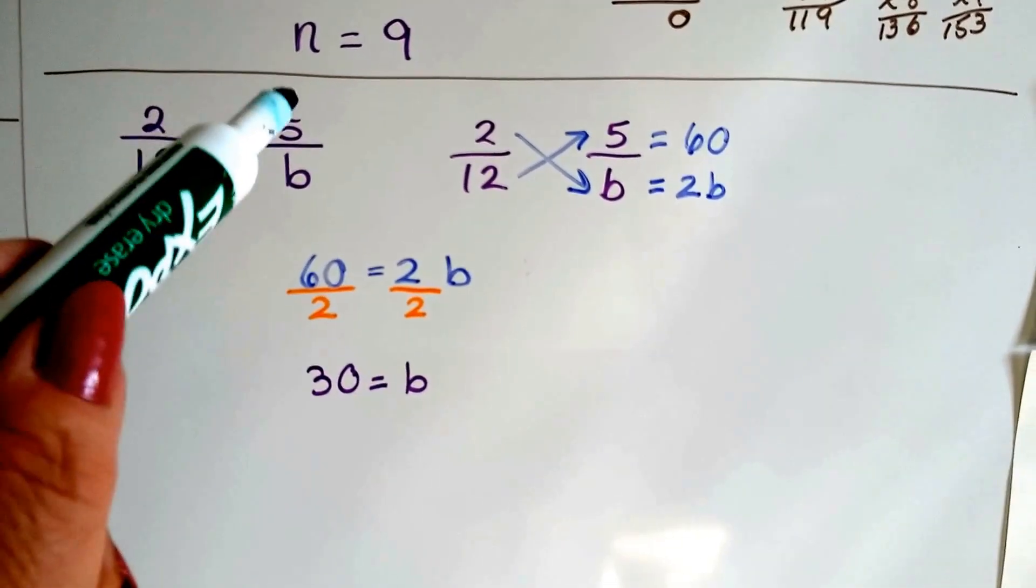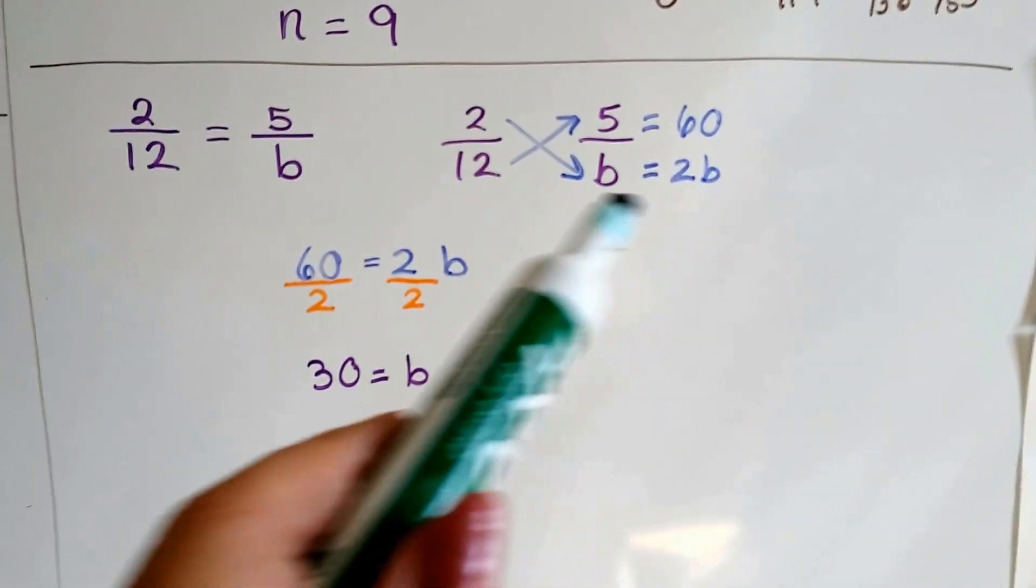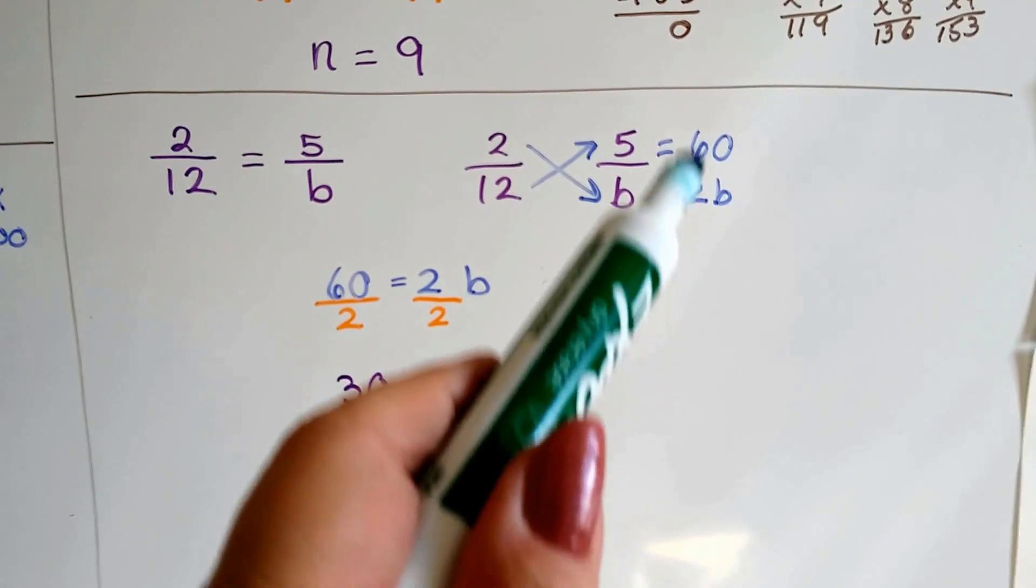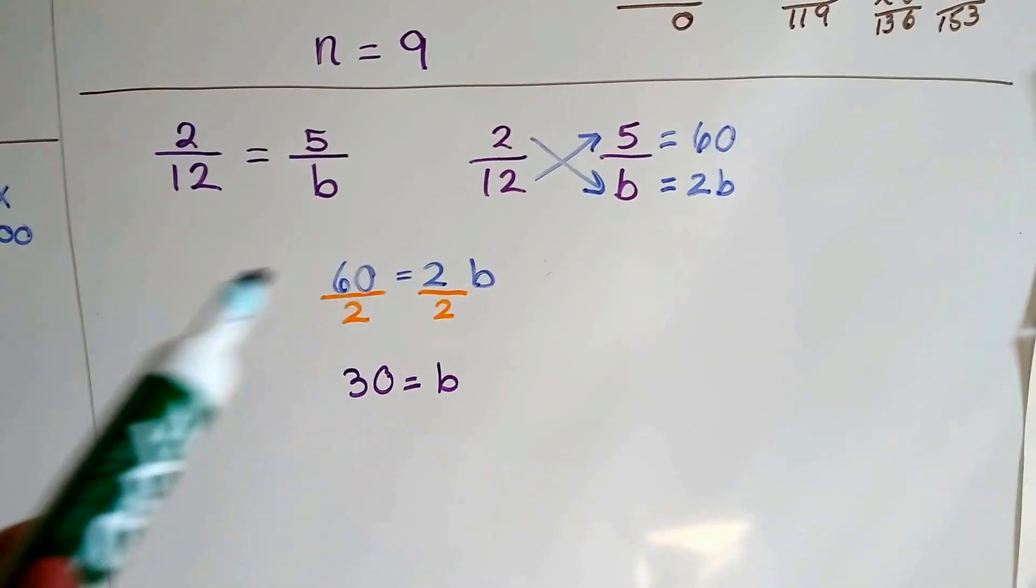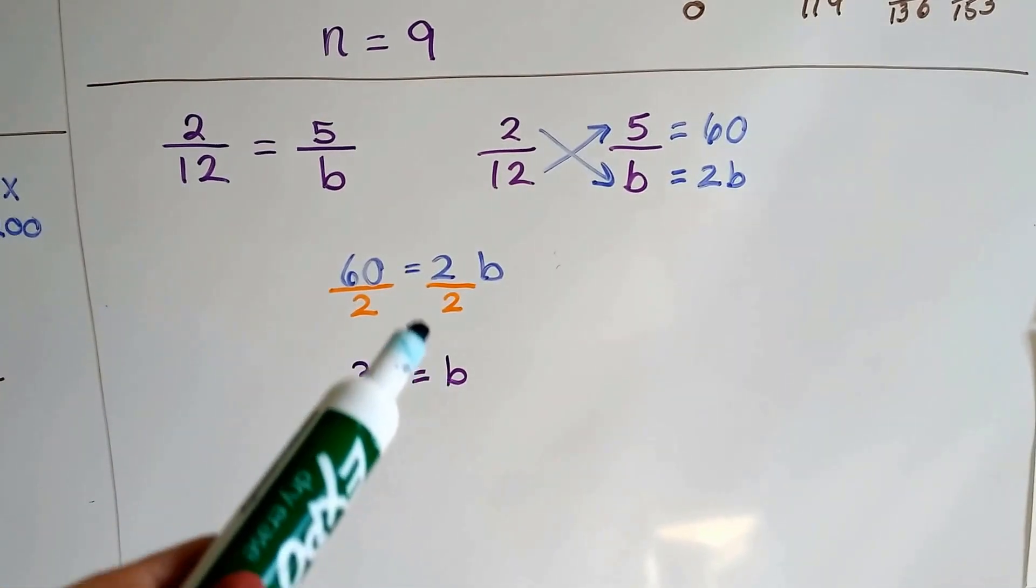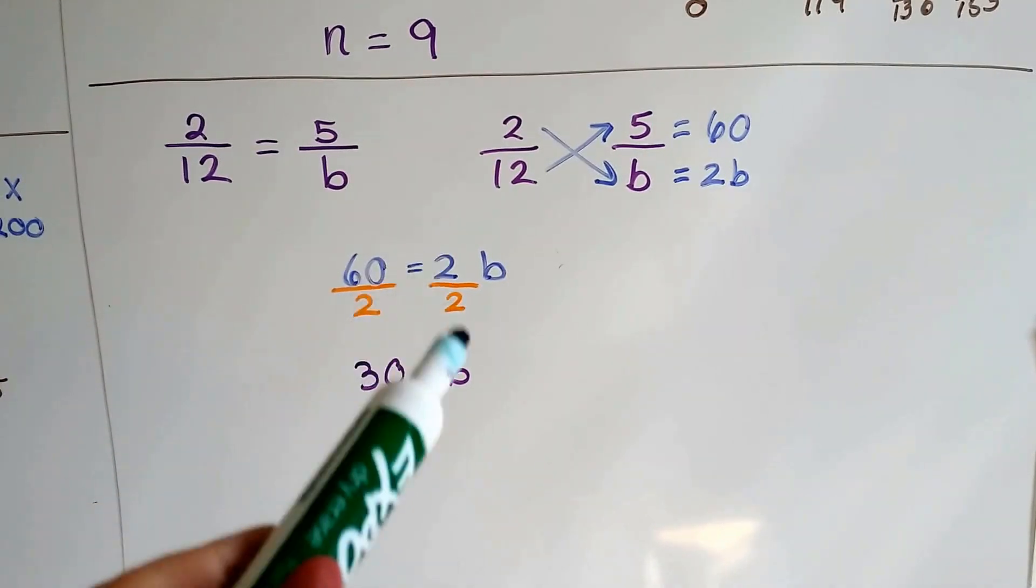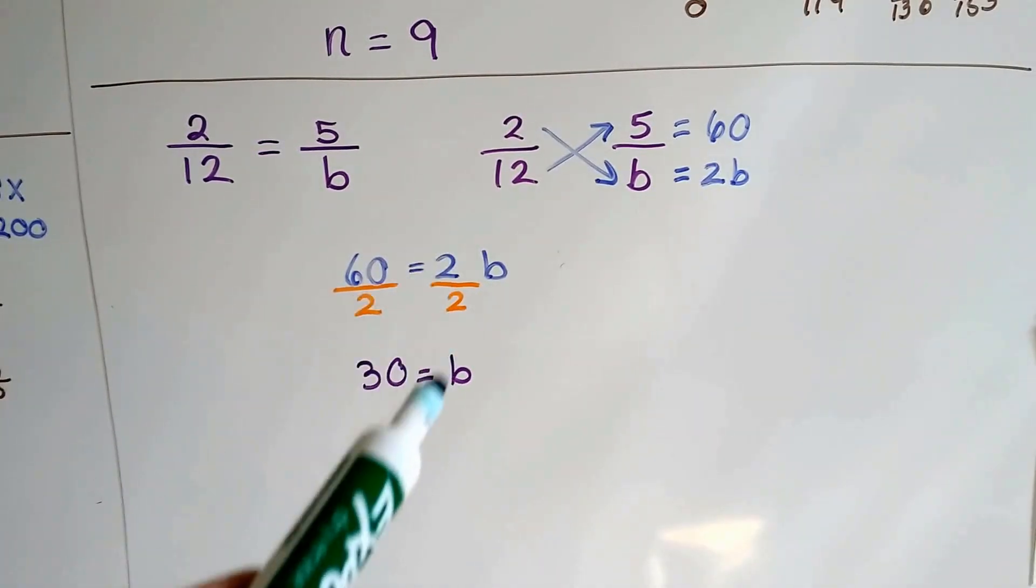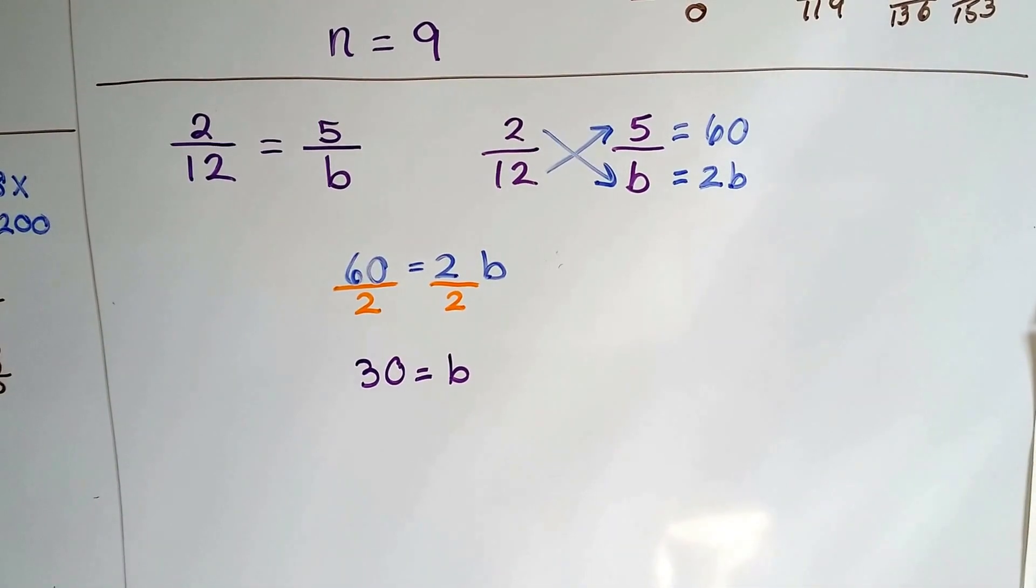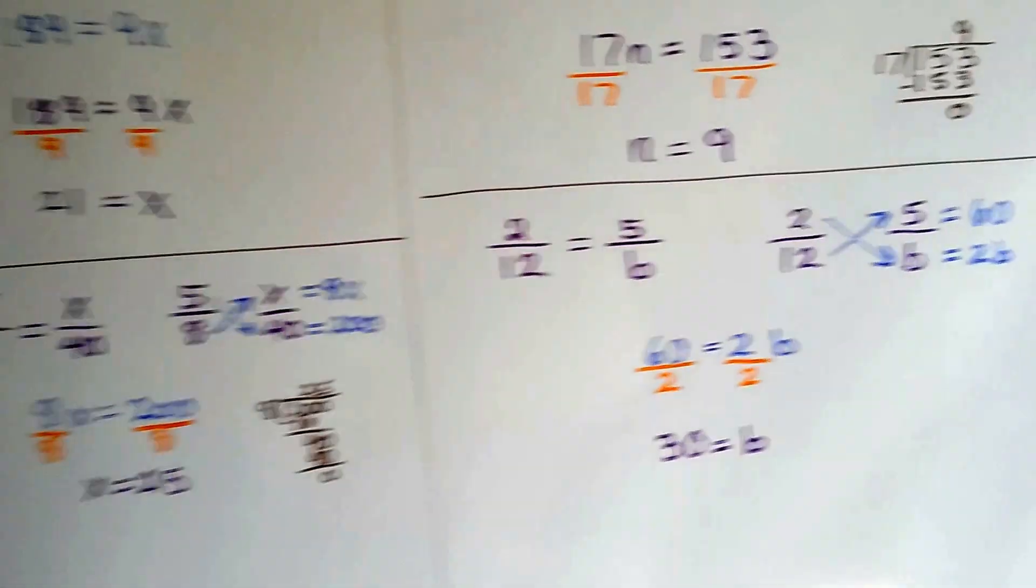Let's try it one more time for those who need it. We've got 2/12 equals 5/b. 2 times b is 2b. 12 times 5 is 60. Our equivalent products are 60 and 2b. That's our equation. 60 equals 2b. We divide both sides by this coefficient 2. Remember the coefficient's the number in front of the variable. And we get a 1 here because of identity property, our invisible 1. And 60 divided by 2 is 30. The answer is 30. There's supposed to be a 30 where that b is. That's not that bad, is it?